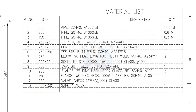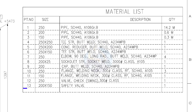Item number 12: 250 NB check valve, swing type, Class 300. Quantity: 1. Item number 13: 200 into 150 safety valve. Quantity: 1.